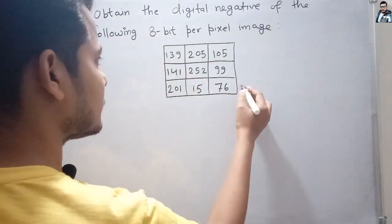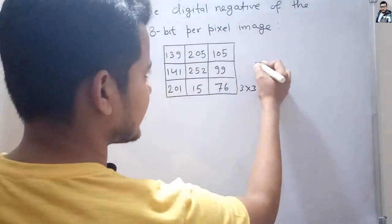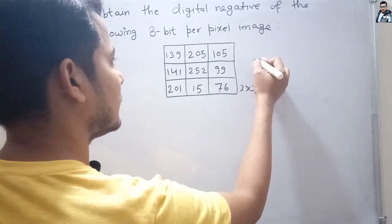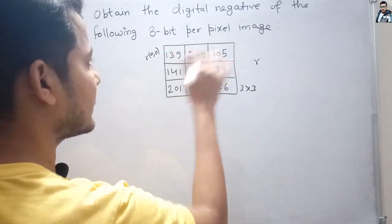The image is a 3 by 3 matrix. Let's represent the pixel values of this image as r, where r(0,0) is 139, and so on.